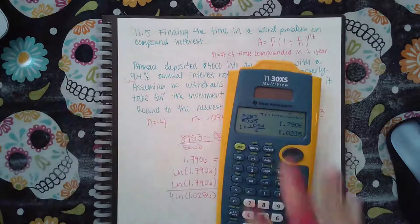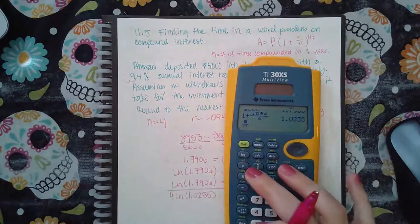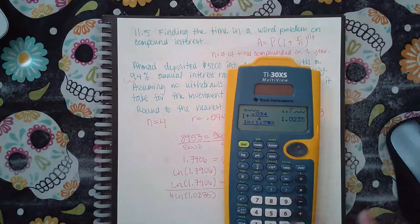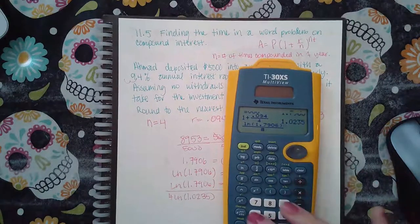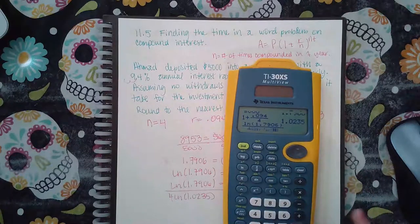And so then I'm going to type that in the calculator. LN of 1.7906 over 4 LN of 1.0235.